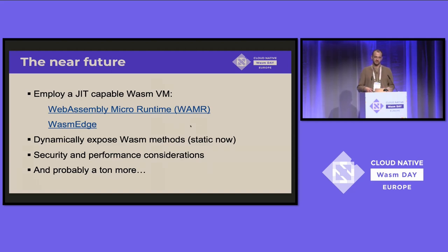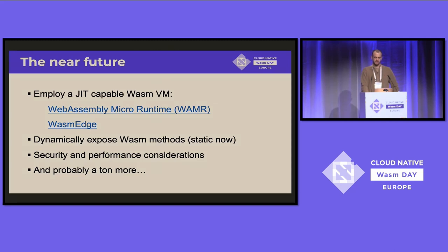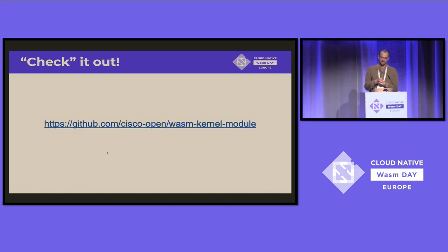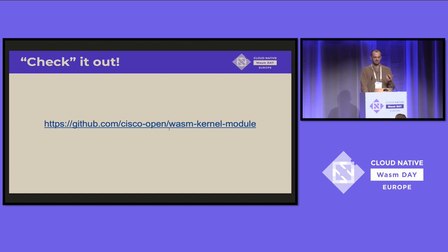We also need dynamically exposed Wasm methods — currently the OPA evaluation method is hardcoded in C, so we need a framework to expose methods as KFUNCs dynamically. There are a lot of security and performance considerations, and this needs review from a real kernel developer — which I am not. The whole project is open source under Cisco's open Wasm kernel module repository. We have a CLI that loads kernel modules from user space into kernel space. Check it out, write issues and questions — we're happy to receive them.